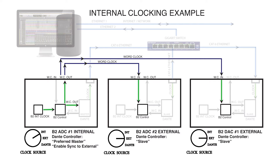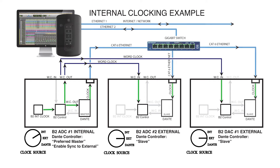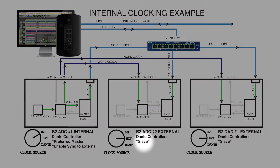Also, you can see how the B2 control sends clock to the Dante card in B2 ADC number 1, which is set to master. This card then transmits clock to the Dante network through the gigabit switch, and to the Dante card in B2 ADC number 2 and B2 DAC number 1. Note how both Dante cards are in slave mode.